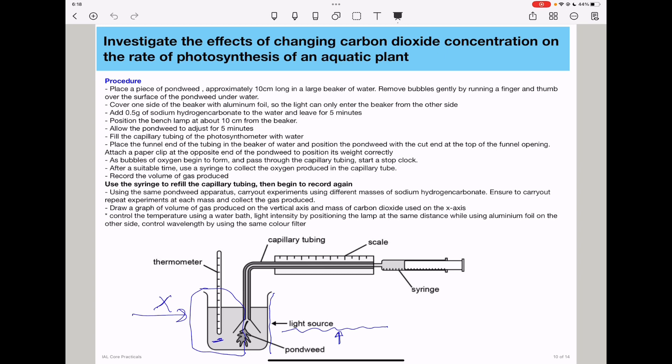That is how you can describe an experiment to determine the effect of changing carbon dioxide concentration on the rate of photosynthesis of an aquatic plant.